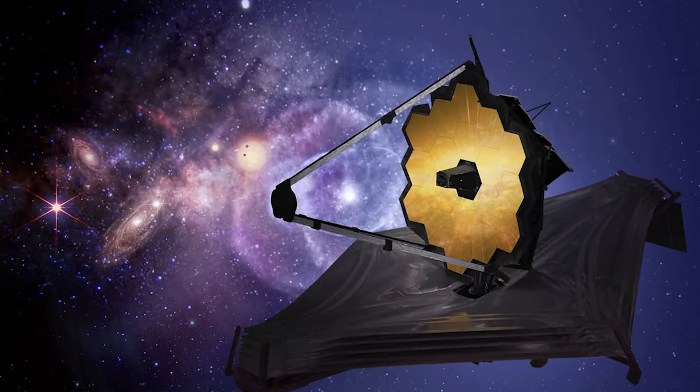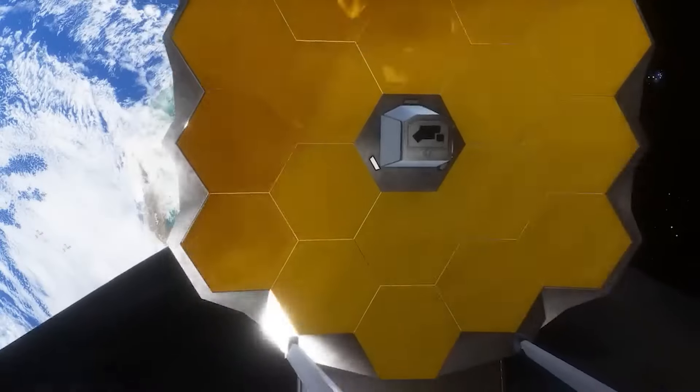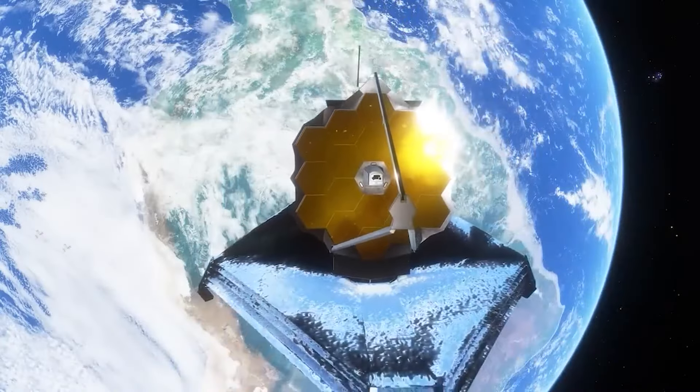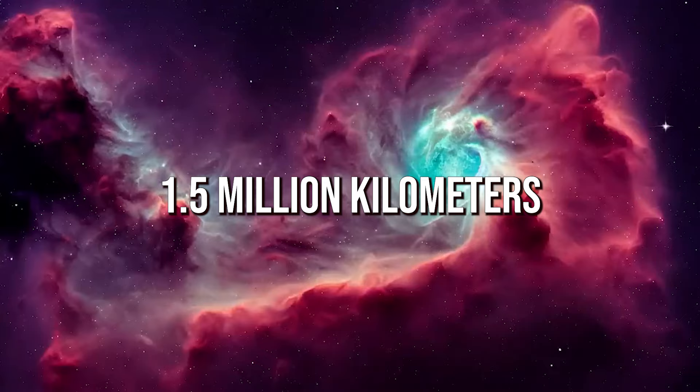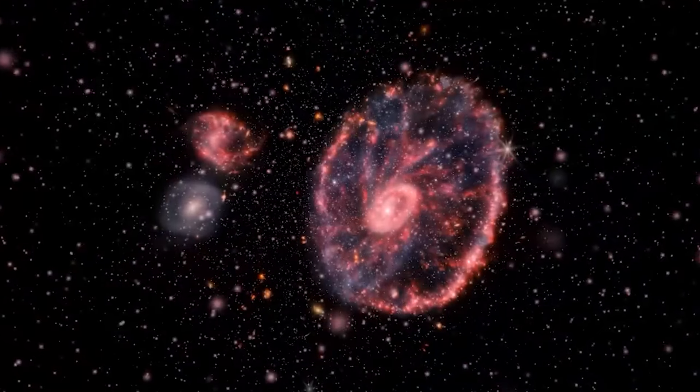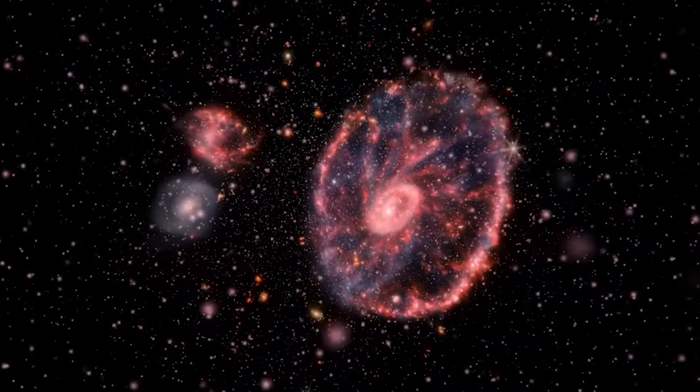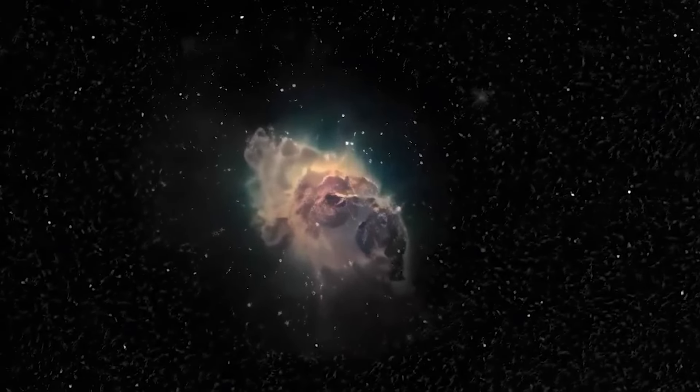Enter the James Webb Space Telescope, JWST. It's like the superhero of telescopes, huge, powerful, and ready to change the game. Parked 1.5 million kilometers away from Earth's noise, and cooled down to super-chilly temperatures, this telescope is equipped with fancy gadgets to see things we've never seen before. And boy, did it deliver!